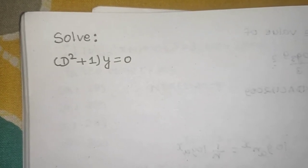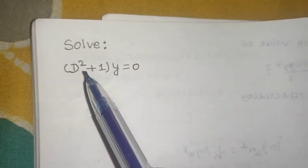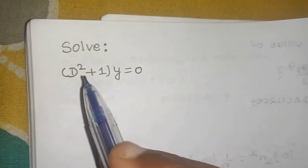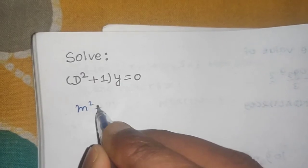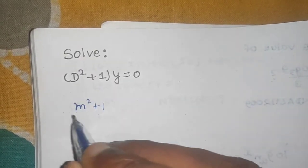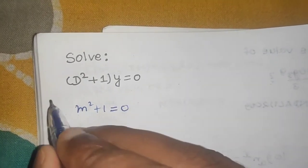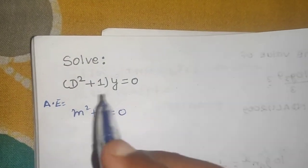How do we find the complementary function? For that we convert it from D to m. When I replace this D by m I will get m square plus 1. Now take this m square plus 1 and equate it to 0. Here we are finding the auxiliary equation. So for finding auxiliary equation we replace D by m and equate this bracket to 0.